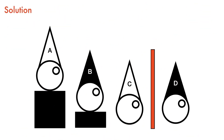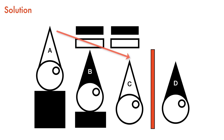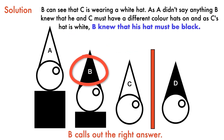Each prisoner knows there are four hats — two black and two white. If prisoner A observed that B and C have the same colored hats, he would assume he has the opposite color and solve the riddle. However, since B and C have different colored hats, prisoner A says nothing. After waiting about four minutes, prisoner B calls out the right answer. C is wearing a white hat. If B were also wearing white, A would have seen two white hats and known his was black. Since A said nothing, B knew he and C had different colored hats, so B's hat must be black.